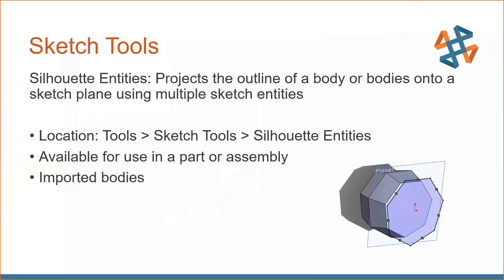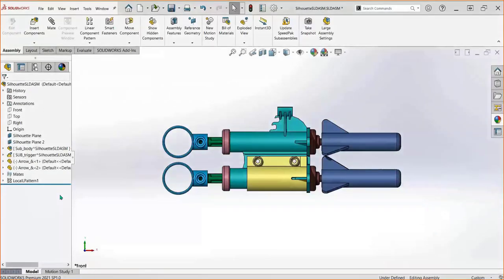Our next sketch tool is Silhouette Entities. This projects an outline of a body onto your sketch plane. This is different from Convert Entities — Convert Entities lets you select a face, edge, or arc to create a sketch. With Silhouette Entities you can select one body, multiple bodies, or go to an assembly. This is also very important: you can use it for imported bodies. If you're working with a customer who sends you parts and you need to make an edit or resize, you can do a silhouette of that imported body and go straight into a sketch to start making edits.